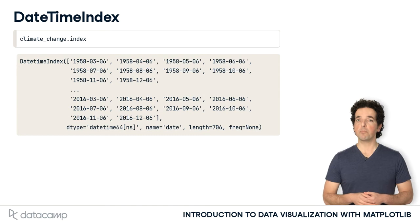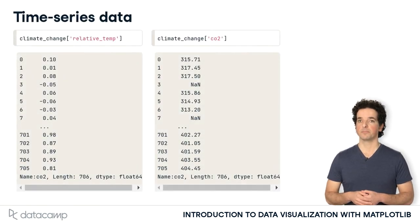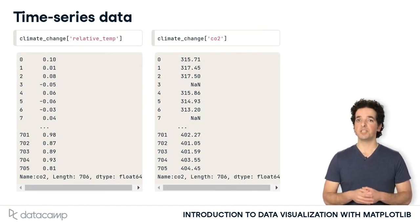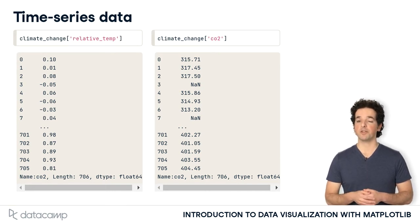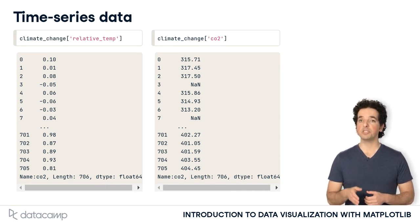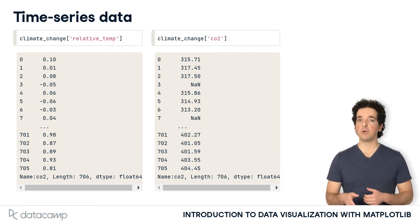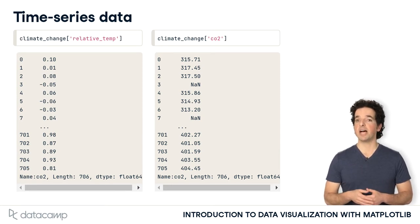This will be important in a little bit. The other two columns in the data are stored as regular columns of the data frame with a floating point data type, which will allow us to calculate on them as continuous variables.